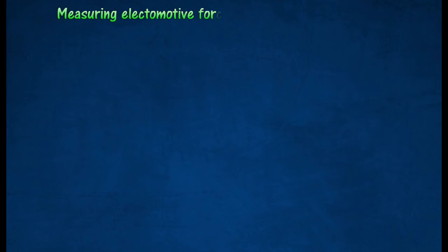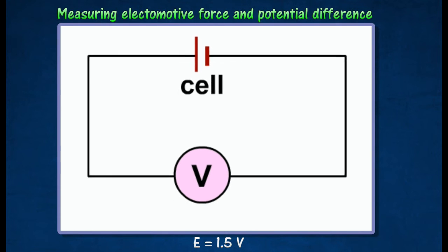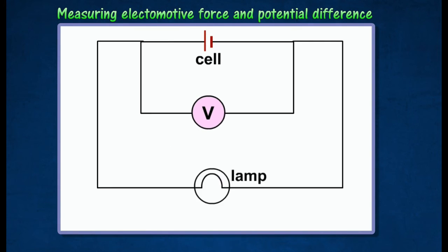Measuring electromotive force and potential difference. When a high resistance voltmeter is connected directly across the terminals of the cell, when the cell is not connected to anything else, the electromotive force is equal to the voltmeter reading, that is 1.5 volts. The reading of the voltmeter will drop a little if a lamp is connected in series to the cell.